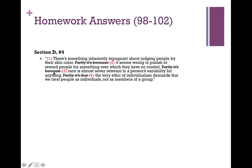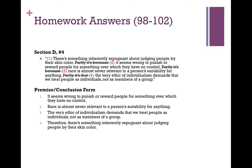We see the indicator word 'because,' so we know that this is a premise. We also notice 'partly, partly, partly' — that tips us off that the reasons being offered here are independent premises. If I say partly this is the reason and partly that's the reason, that's a sign we're dealing with independent premises. Here's how we would put this argument into premise-conclusion form. We had to reorder and renumber the propositions because the conclusion was stated first in the initial presentation, and we want to put it last to arrange things according to logical sequence.